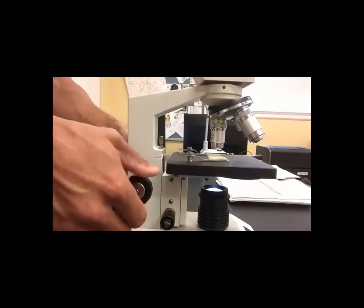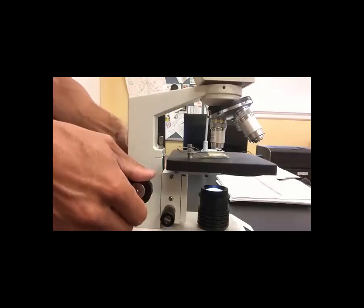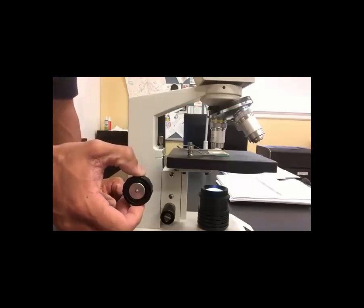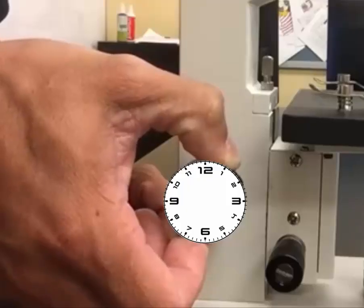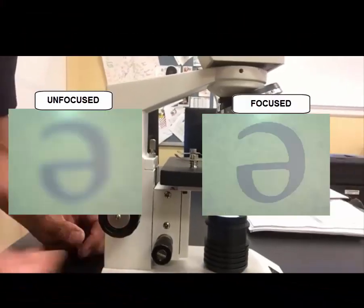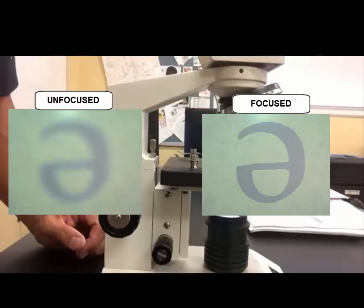We'll then turn the coarse adjustment knob until the stage comes all the way up, and this will bring the image out of focus as you can see here. If you take a look, I place my thumb at the 12 o'clock position to show you how little I have to turn it. I barely move it towards the 1 o'clock position, and this will bring the image into focus and give you a crisp picture like this.